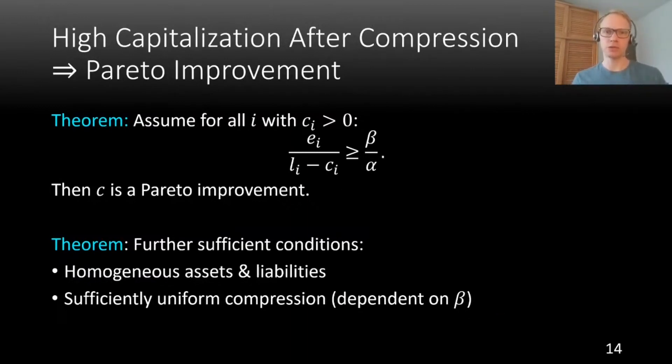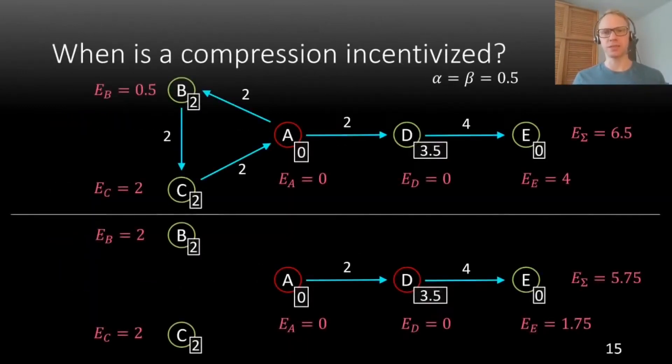And I want to talk about our second research question regarding banks' incentives to compress. Going back to our example from before, we can see that this compression is incentivized, and we can just do this by comparing equities. Bank A has the same equity as before after compression. Bank C also has the same equity as before. And Bank B actually increases its equity. So all of these three banks will agree to compression. And this is the case even though social welfare here decreases.